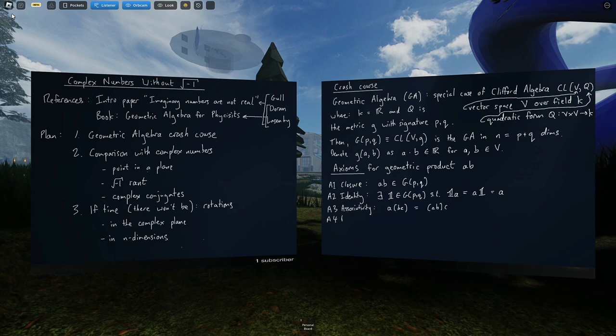The fourth is distributivity. And these are all boring axioms in the sense that pretty much all of the algebras we're used to dealing with, all the mathematical objects we work with typically tend to obey these.